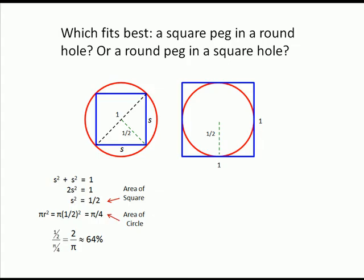Consider a square whose side is one unit. Then the area of the circle is again pi over four. The area of the square is one and the proportion is pi over four or about 79 percent.